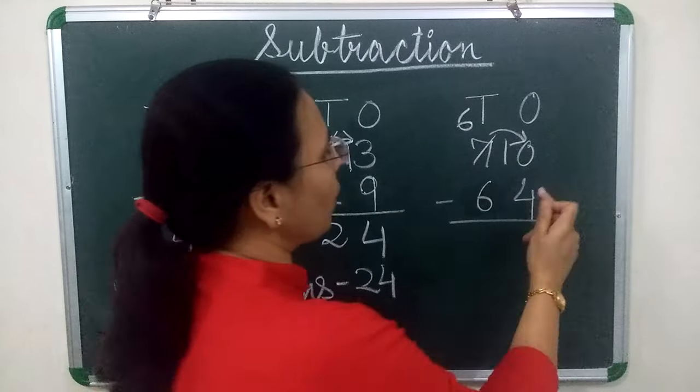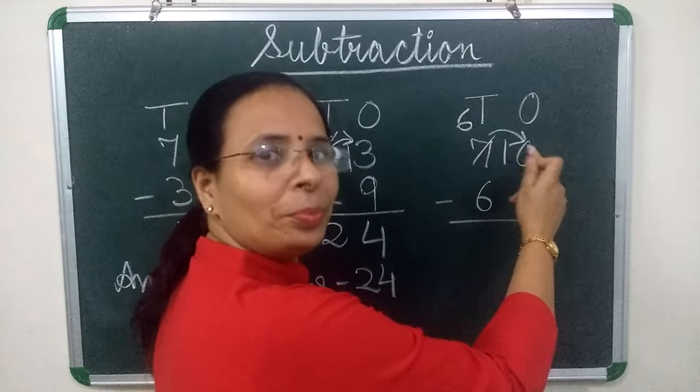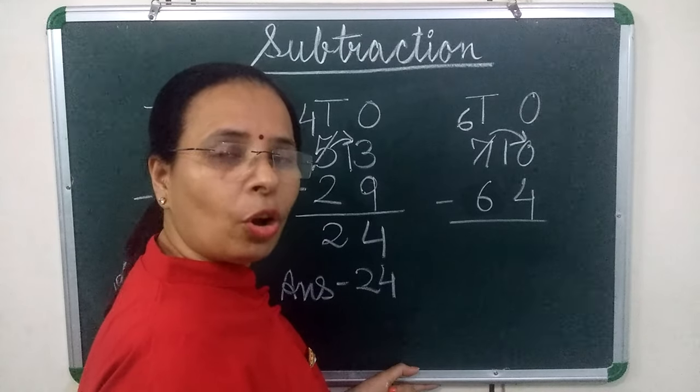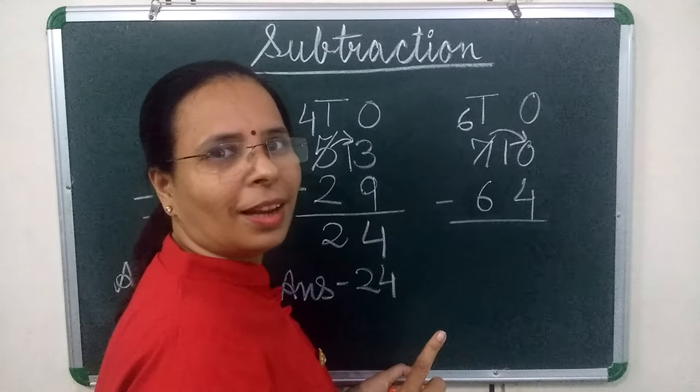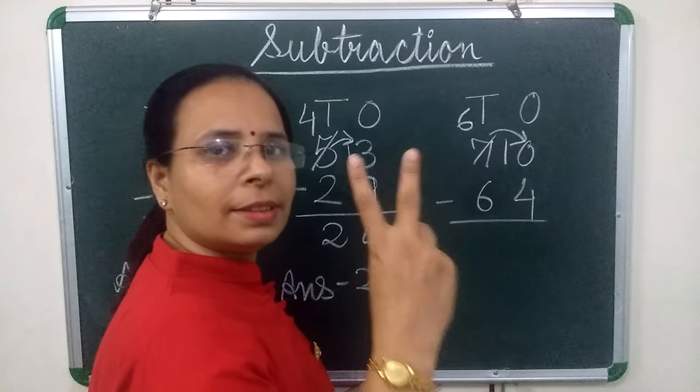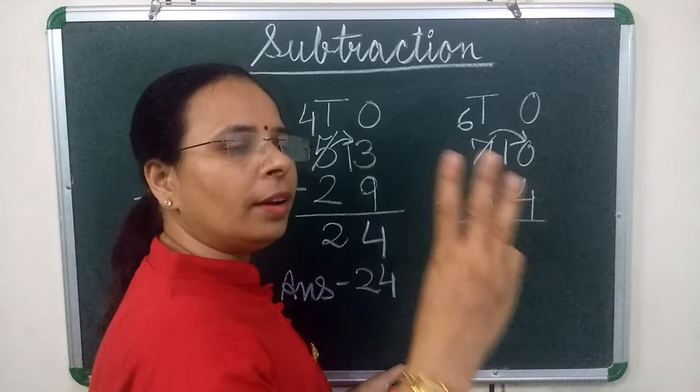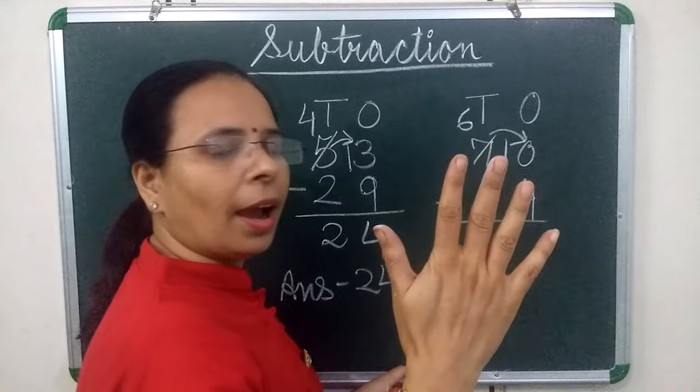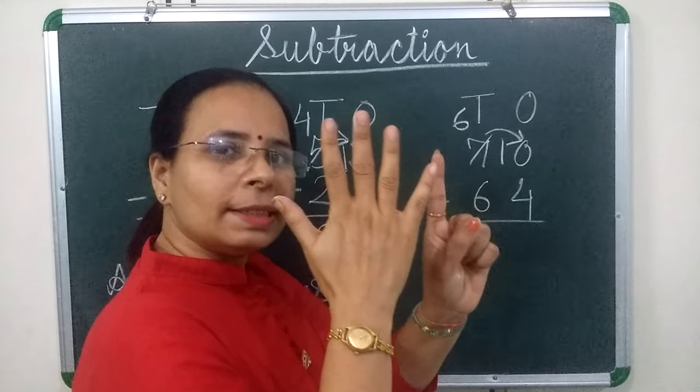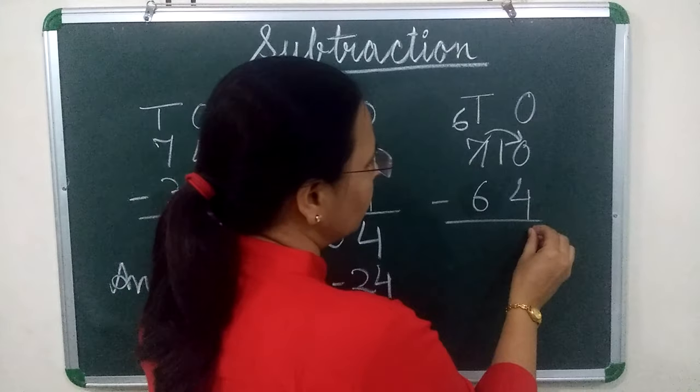Now we will subtract 4 from 10. And we will start counting after 4 up till 10. So what comes after 4? 5, 6, 7, 8, 9, 10. So how many fingers are there? 6. So we will write 6.